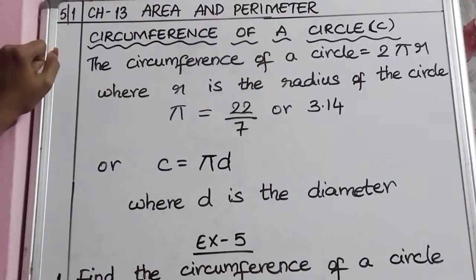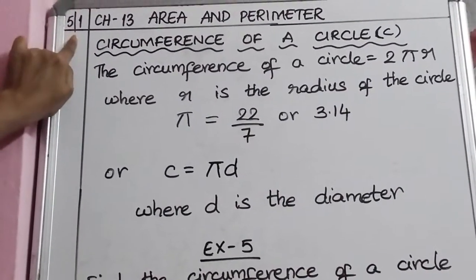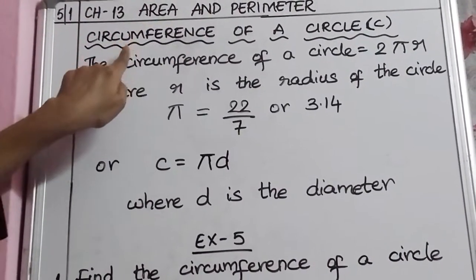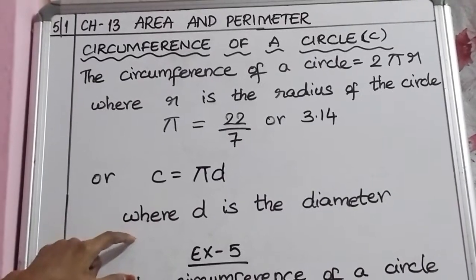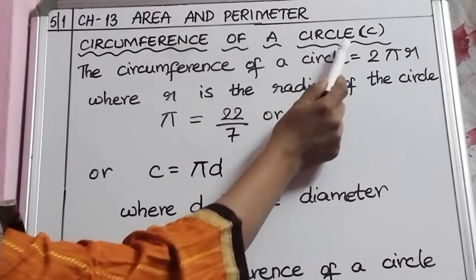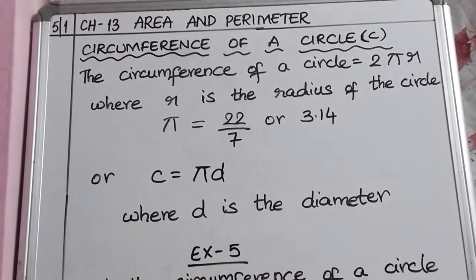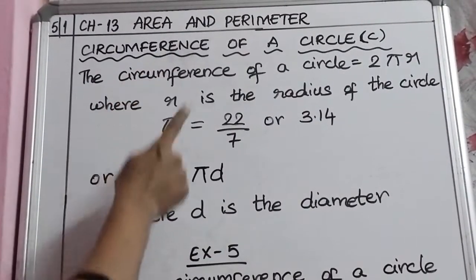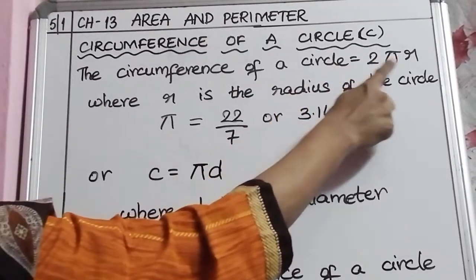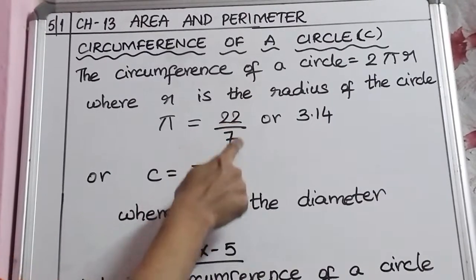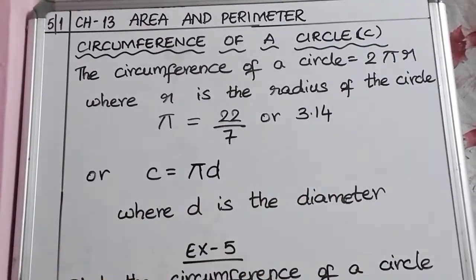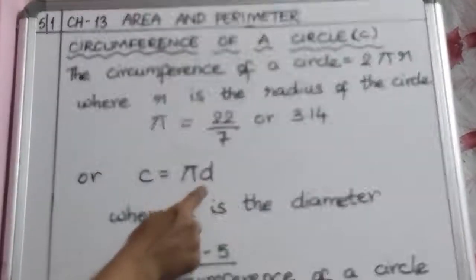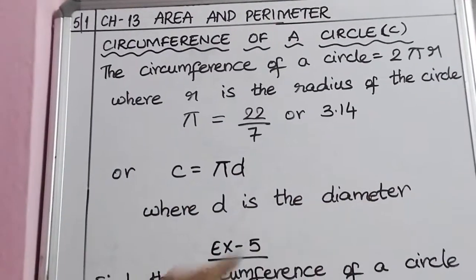Whatever we have discussed, copy in your classwork books. Write today's date, the chapter number, and copy the chapter name and the definition. The circumference of a circle is represented by the letter C. So, C = 2πR. Pi is 22/7 or 3.14. C = πD is the other formula, where D is the diameter.